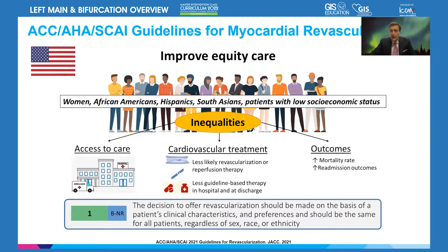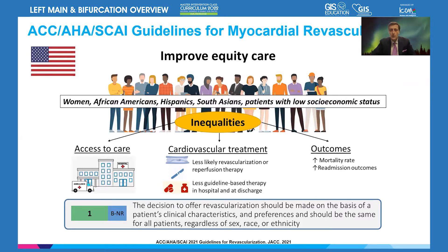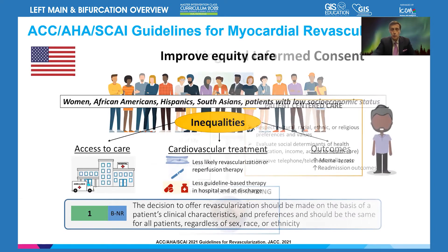Equity of care and understanding how we can address all sorts of local socioeconomic status — not only living in an abstract, theoretical world of an affluent population — that is not the purpose of these guidelines. Access to care, cardiovascular treatment, and objective outcomes are really in the forefront. It's a class one indication to offer revascularization on the basis of patients' clinical characteristics and preference, respected for all patients regardless of sex, race, and ethnicity. This is a new guideline, extremely important for all of us.